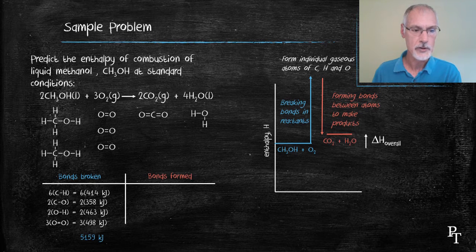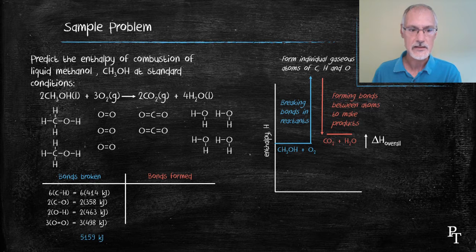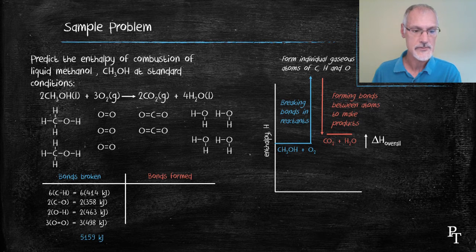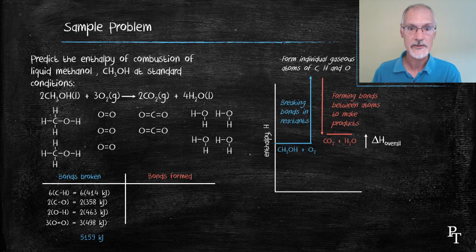Now the bonds I form. Again, I want to take into account how many molecules I make of each substance. Now the first substance, which is carbon dioxide, it has two carbon oxygen bonds in it. And in fact, because I'm making two of them, I'll have four carbon double bonded oxygen bonds.